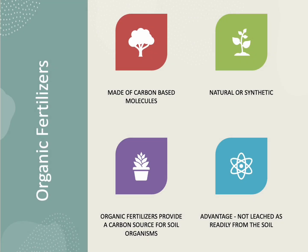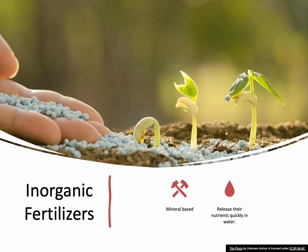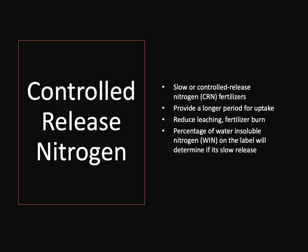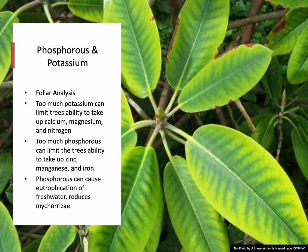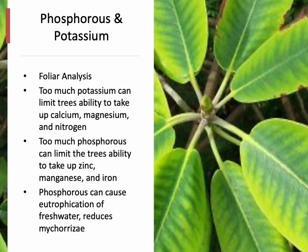Organic fertilizers are carbon-based and may be either synthetic or natural. They provide a carbon source for soil organisms and are not leached as readily from the soil. Inorganic fertilizers are mineral-based and release nutrients quickly. Controlled-release nitrogen is preferred because it provides nutrients over a long period and reduces leaching and the risk of fertilizer burn. The percentage of water insoluble nitrogen (WIN) on the label determines whether it's slow release. For phosphorus and potassium, use soil and foliar analysis to guide application rates — excess phosphorus can cause environmental problems like eutrophication of ponds and streams and reduce root nutrient uptake.